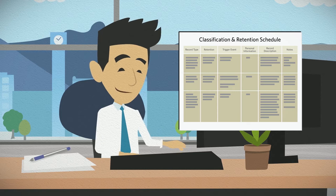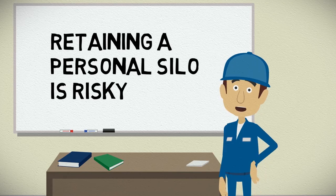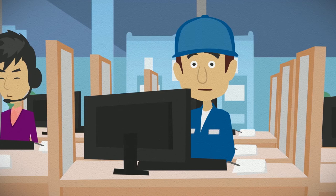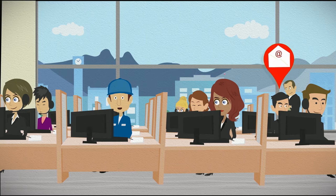Remember, university records — even if they are in the form of an email addressed to you — do not belong to you personally. Retaining a personal email silo is also risky to the university. How can retaining email that is CWL password-protected be a risk? The risk comes from the way we share information in email. When I have an email that others need to access, I usually forward it to whomever I like, meaning access to the content is controlled by me alone.